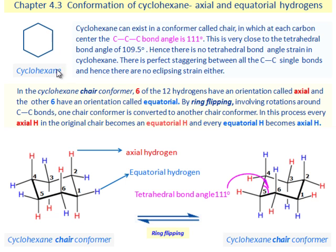Cyclohexane can exist in a conformer called chair, in which at each carbon center, the C-C-C bond angle is 111 degrees. This is very close to the tetrahedral bond angle of 109.5 degrees.